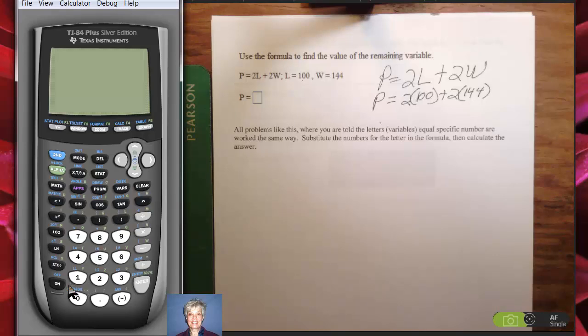P is going to equal 2 times 100 plus 2 times 144. Really, the width should not be longer than the length, but don't tell anybody. Let's take an easy route here and go in the calculator. I want to show you how you can just write what you have here. Let's say 2, left parenthesis, 100, parenthesis closed, plus 2, parenthesis, 144, parenthesis closed, enter, and your answer is 488.